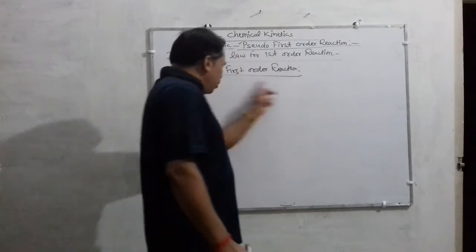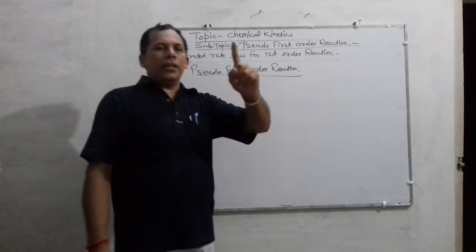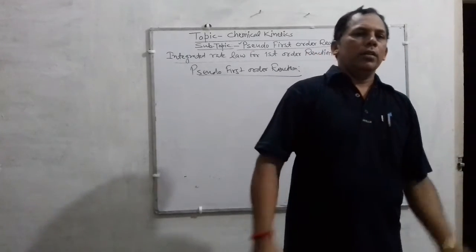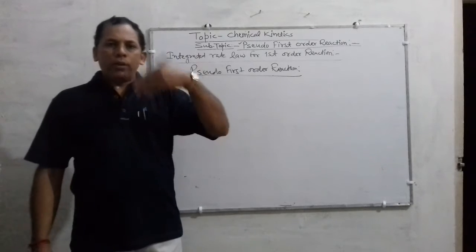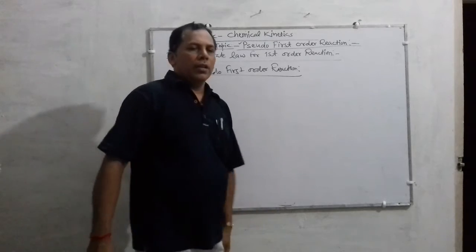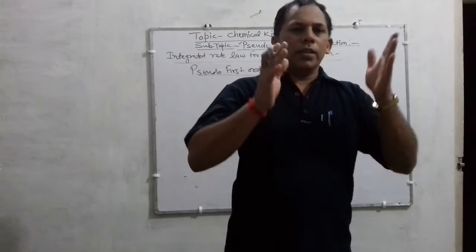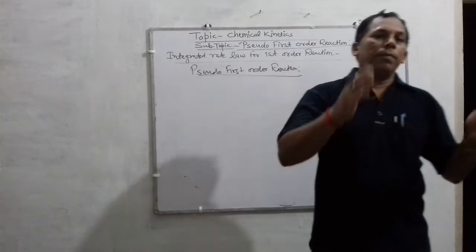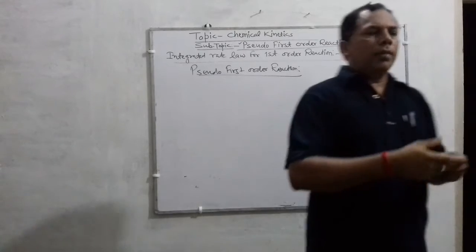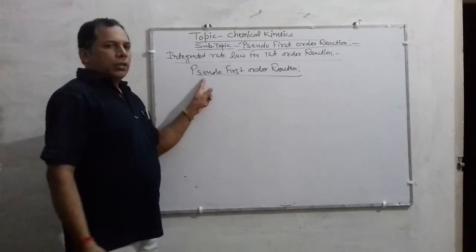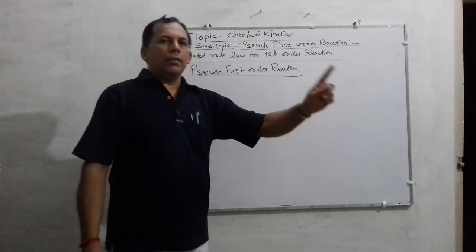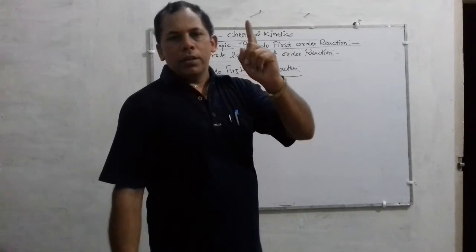For example, the inversion of cane sugar is generally a bimolecular reaction, but under certain conditions it becomes a first order reaction, because the concentration of water is quite large and cannot be changed appreciably. That is why the inversion of cane sugar is a pseudo first order reaction, but actually it is a bimolecular reaction.